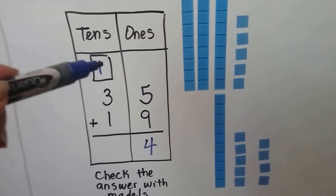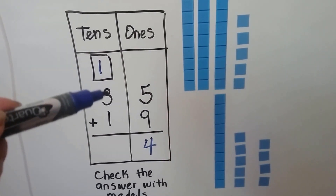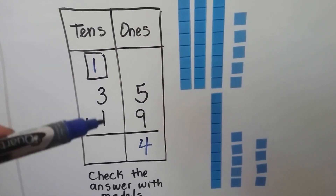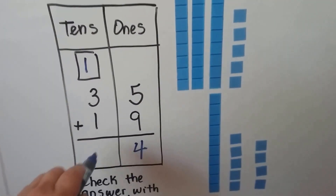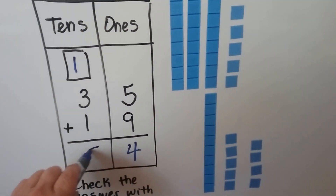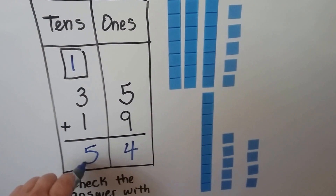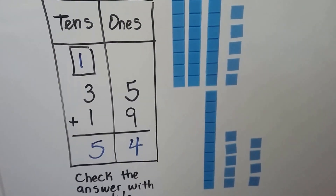We count our tens: 1, 2, 3, 4, 5. We get 54.